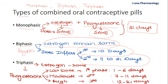In triphasic pills, the estrogen dose remains the same, whereas the progesterone dose differs across three phases. A low dose is given during the first phase from day 1 to day 6, a moderate dose during the second phase from day 7 to day 11, and a high dose during the third phase from day 12 to day 21. To summarize: monophasic means the same dose for 21 days, biphasic means two different progesterone doses, and triphasic means three different progesterone doses.